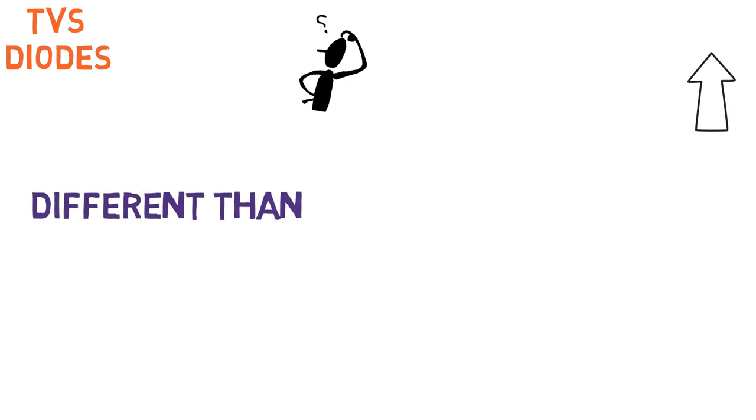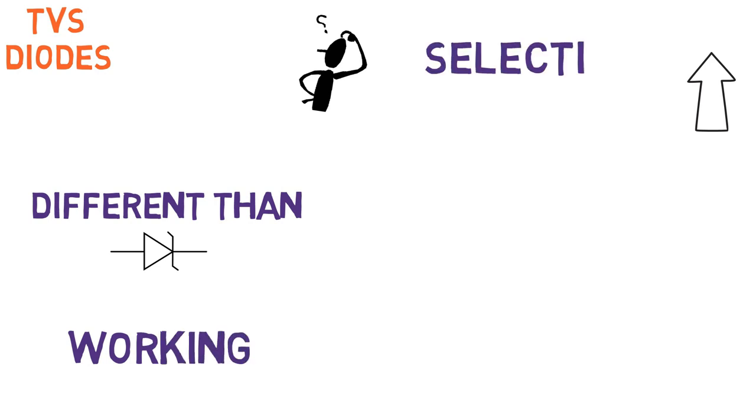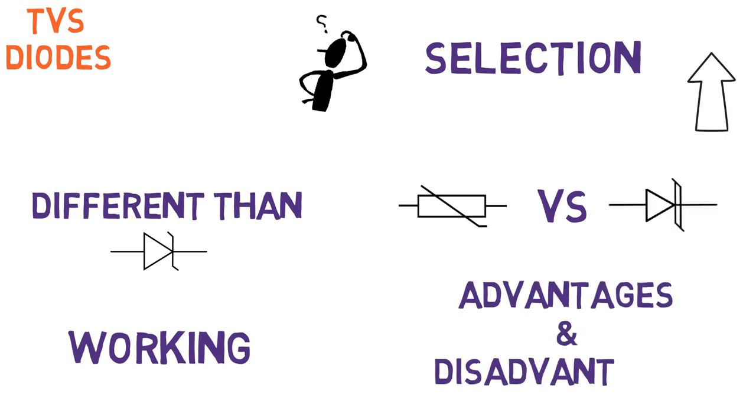And in this session, we'll see what is a TVS diode, how is it different from the Zener diode, its working principle, its selection parameters, the difference between MOV and TVS diode, its advantages and disadvantages as well.